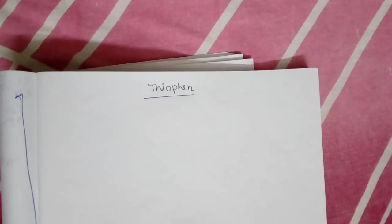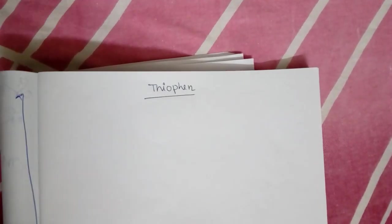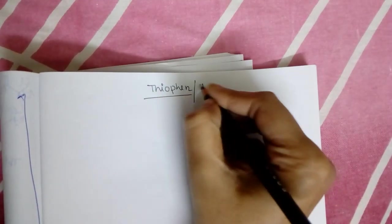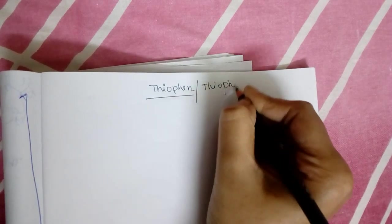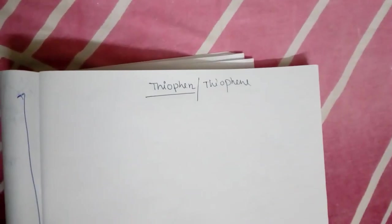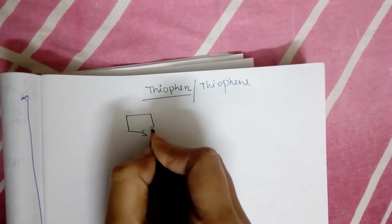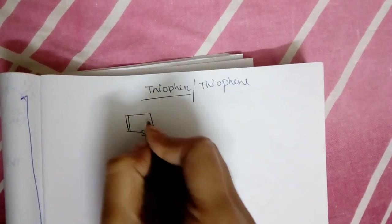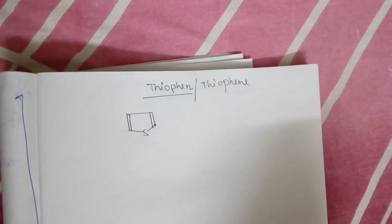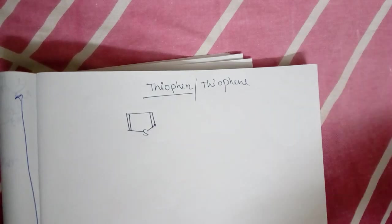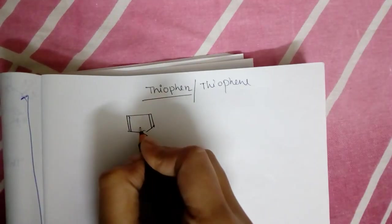This video is about thiophene. It can be spelled as P-H-E-N or P-H-N, both are correct. The formula is exactly like pyrrole, and in place of nitrogen here, sulfur is present and it's called thiophene.